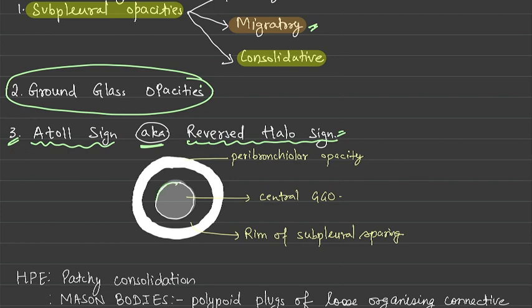What you will see is that in the bronchioles you will find central ground glass opacity. There will be a peripheral rim of sparing - there will be no opacity, it will be spared. And then there will be another region of opacity called peribronchial opacity. These three findings will form a sign which is known as the atoll sign or reverse halo sign.